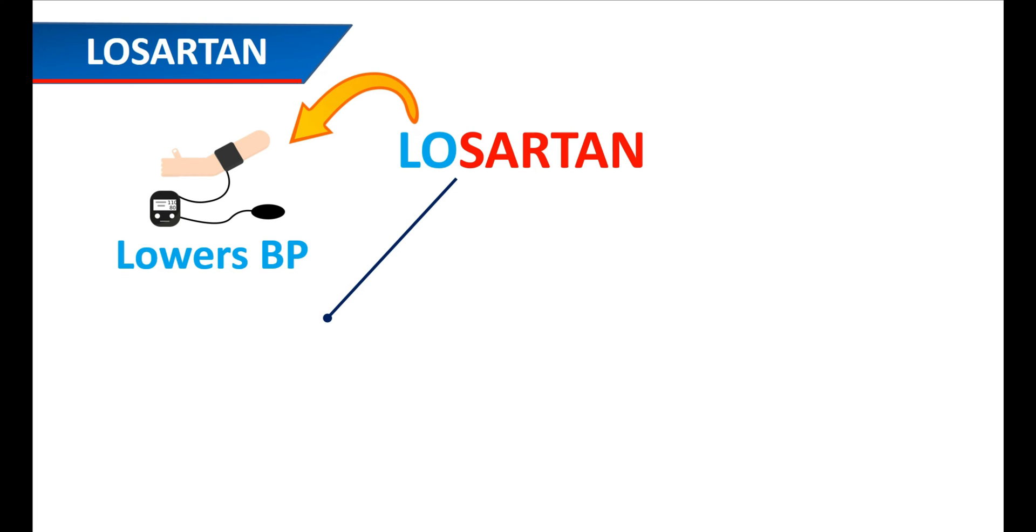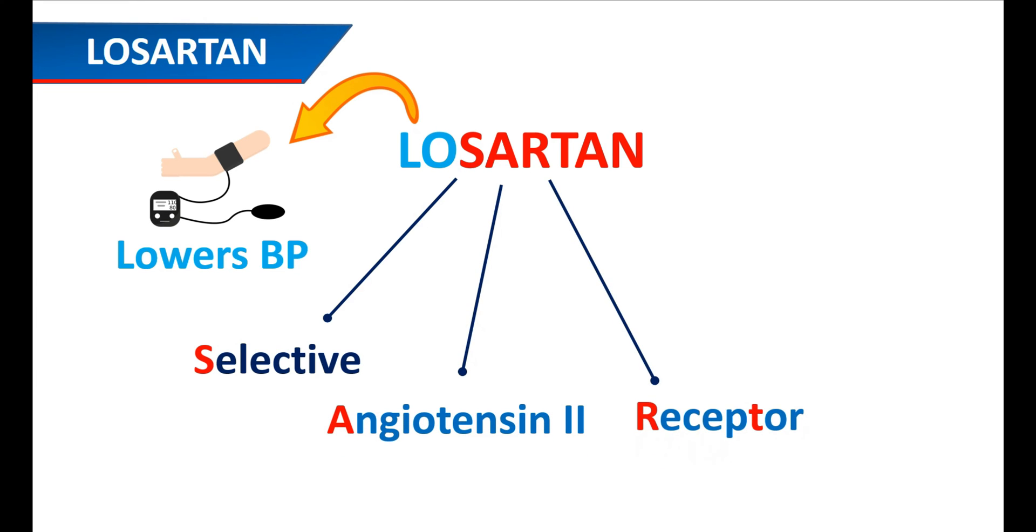The letter S indicates selective, A indicates angiotensin 2, RT indicates receptor, and AN indicates antagonist.